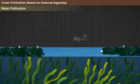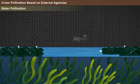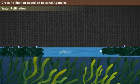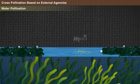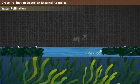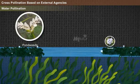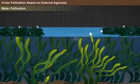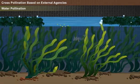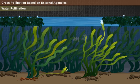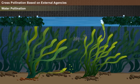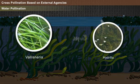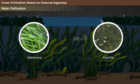Water pollination: in this type of pollination, pollens are drifted by water until they come in contact with the female flowers. It usually occurs in pond weeds and water weeds. Most often, the pollens float on the surface of water, and in rare cases they travel underneath. Examples include Vallisneria and Hydrilla.